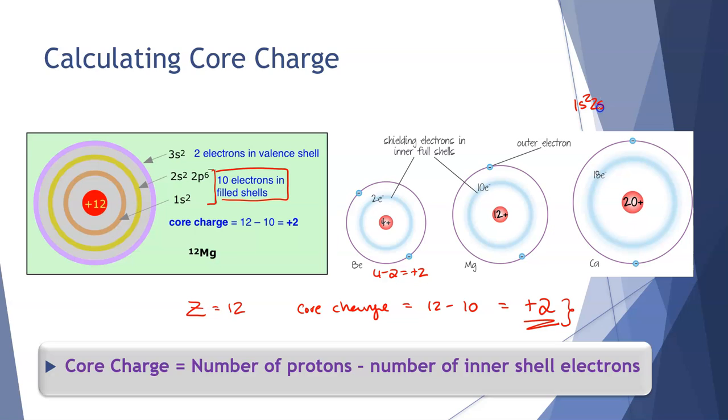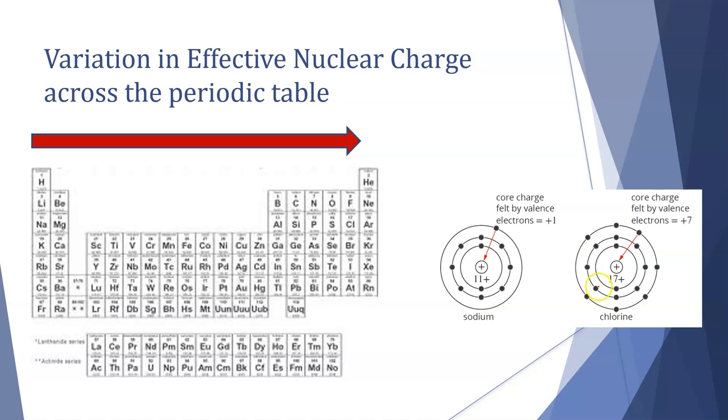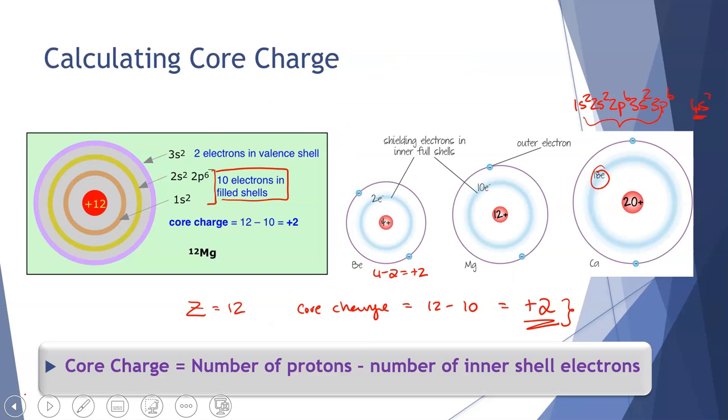If we look at calcium, it has 1s2, 2s2, 2p6, 3s2, 3p6, and then because it is a transition metal, we're going to go to our 4s, which gives us 18, 20. So these 18 are our inner core electrons. 4s2, remembering the 4s is our valence shell, so these are the ones we're going to be looking at. So it's going to be 20, which is the Z for calcium, minus 18, which gives us a plus 2.